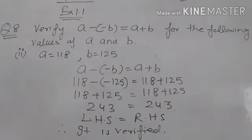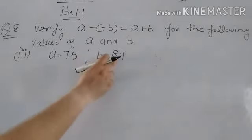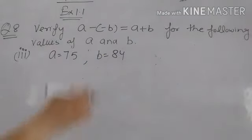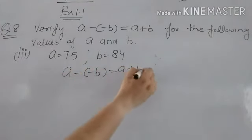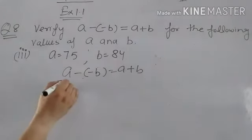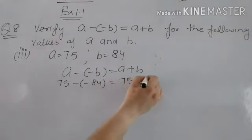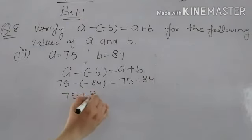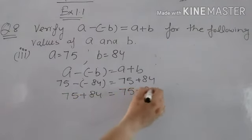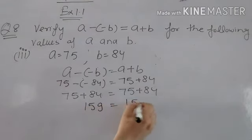Now the third part: a equals 75 and b equals 84. Our statement is a minus minus b equals a plus b. Putting these values in LHS: 75 minus minus 84. For RHS: 75 plus 84. Solving: 75 minus minus 84 equals 75 plus 84. Adding both, we get 159 on both sides.